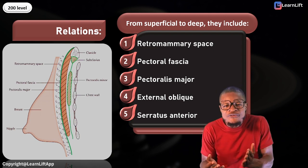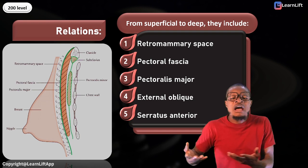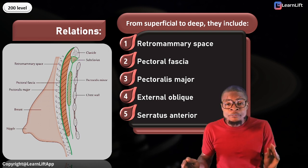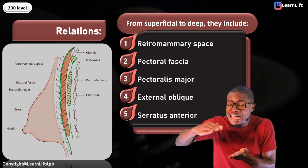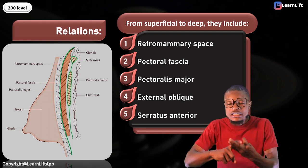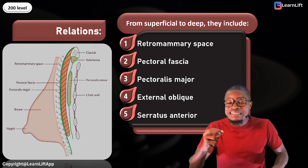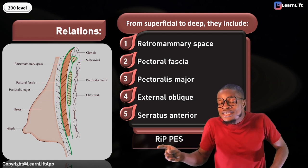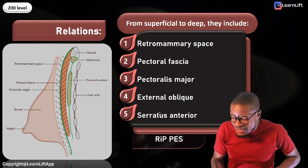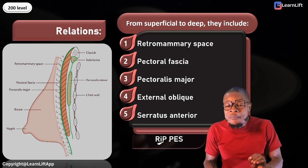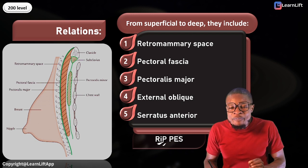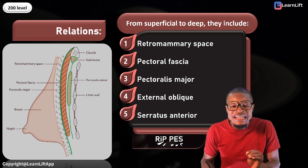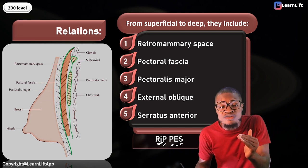How do I remember them? You must list them from superficial to deep — the retromammary space, the pectoral fascia, the pectoralis major, the external oblique, and the serratus anterior. There is an acronym for them: R-I-P-P-E-S — where R is retromammary space, the first P is pectoral fascia, the next P is pectoralis major, then E for external oblique, and S for serratus anterior.